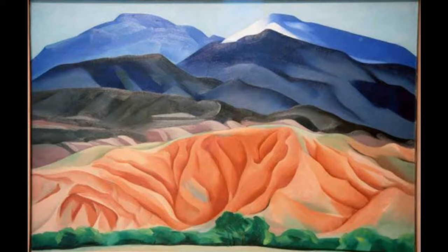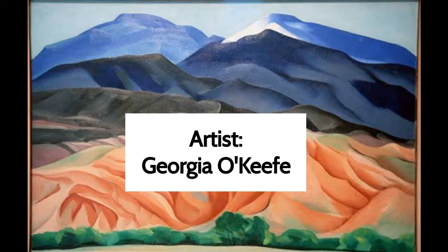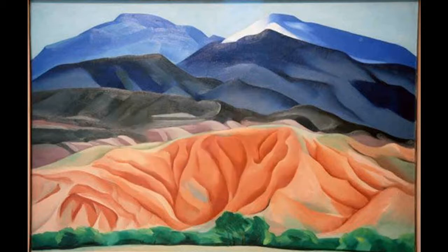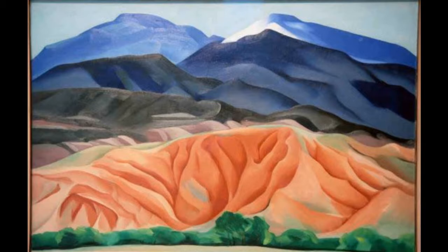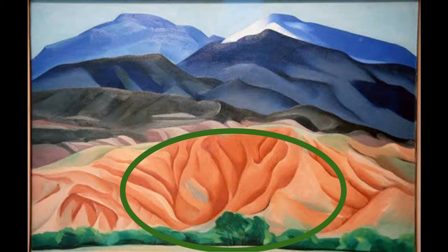Now I'll use one of Georgia O'Keeffe's landscapes to show how the amount of detail also shows distance. The amount of detail shows distance because more details means closer, less details means in the middle, and no details means far away. On this red mountain, we see a lot of detail — more value shading, all those ridges or valleys — and it makes it look more interesting and more 3D.